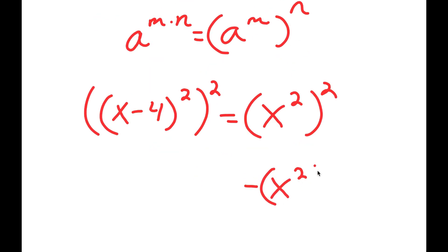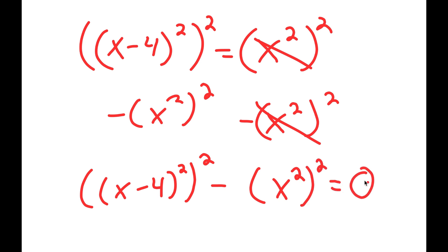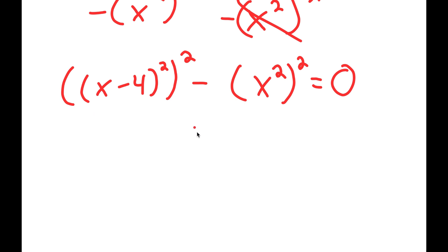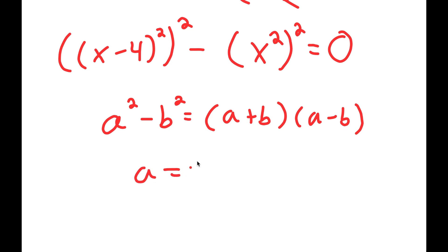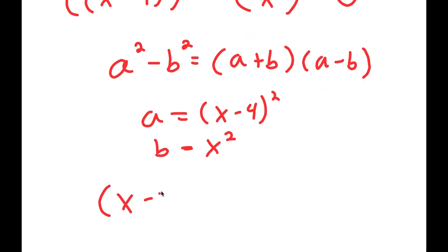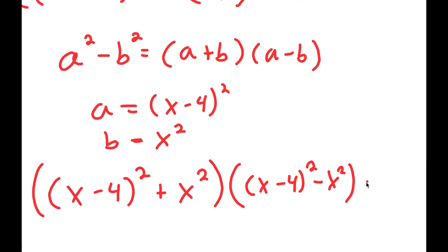Now I'm going to subtract x to the power of 2 to the power of 2 on both sides, so these two cancel out. And then I get x minus 4 squared to the power of 2 minus x squared to the power of 2 is equal to 0. Now, if I have something in the form a squared minus b squared, this is equal to a plus b times a minus b. So in this case, a is equal to x minus 4 squared and b is equal to x squared. So I get x minus 4 squared plus x squared times x minus 4 squared minus x squared, and this is equal to 0.